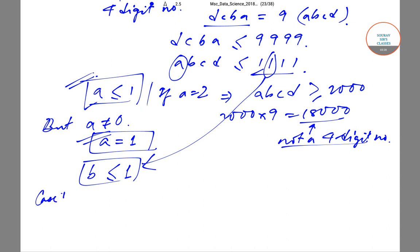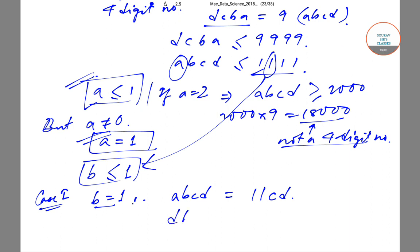The first case we will check is B equal to 1. If B is equal to 1, then ABCD will look like 11CD. Now if we find out DCBA by reversing, DCBA will look like D1C1.